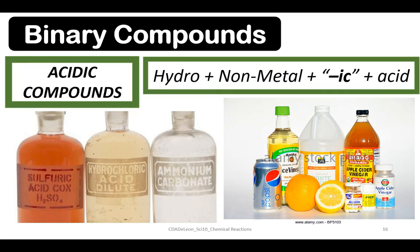Acids are molecular compounds that release hydrogen ions. A binary acid consists of hydrogen and one other element. The name of the acid is based on the ion attached to the hydrogen. In naming acidic compounds, you put 'hydro' as the prefix, followed by the root word of the non-metal, and 'ic' as the suffix, followed by the word 'acid'.